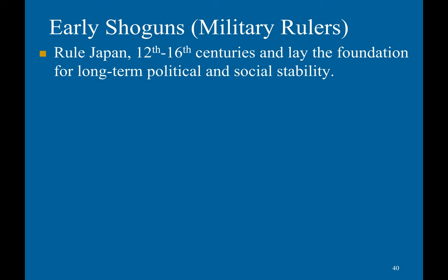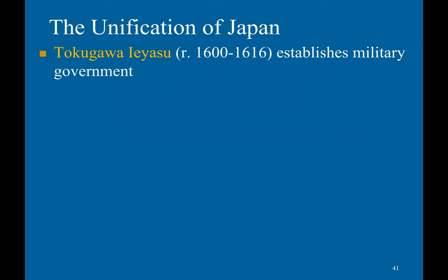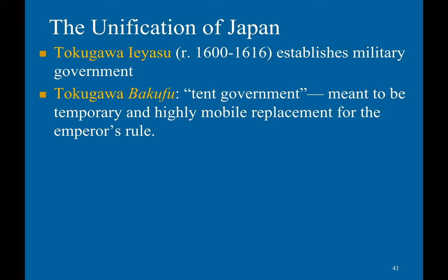Early Shoguns ruled Japan from the 12th to 16th centuries and laid a foundation for long-term political and social stability. They were large landholders with private armies, with the Emperor merely being a figurehead. However, Japan plunged into constant civil war in the 16th century during the Sengoku, or 'Country at War,' period.